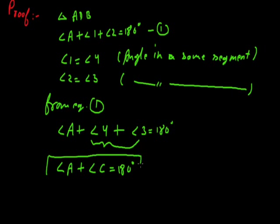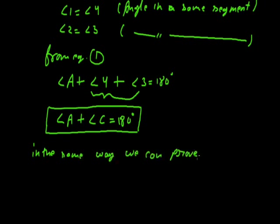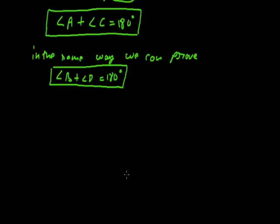That is what we had to prove — the sum of the opposite angles of a cyclic quadrilateral is 180 degrees. In the same way we can prove that angle B plus angle D is also equal to 180 degrees. Now we move to the next theorem related to the cyclic quadrilateral.